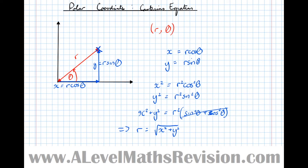So there are three things to remember: x equals R cos theta, y equals R sin theta, and R equals the square root of x-squared plus y-squared. They're the three facts that you need to know to be able to find the Cartesian equation of a polar curve.